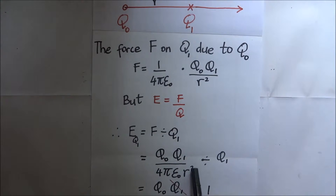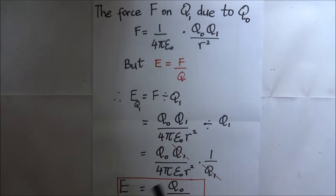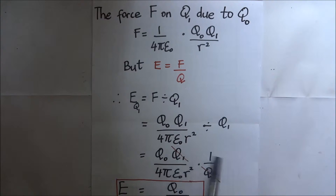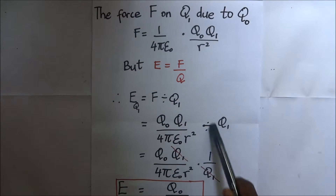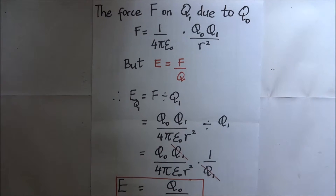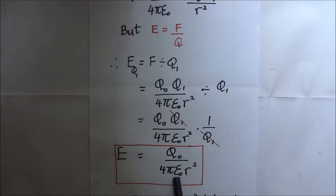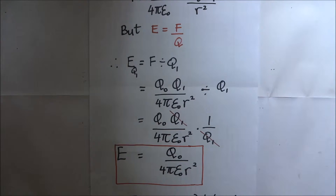Substituting, we get Q naught times Q1 over four pi epsilon naught times r squared, all divided by Q1. Continuing the arithmetic, Q1 cancels, and we remain with our formula for the intensity of a point charge: E equals Q naught divided by four pi epsilon naught times r squared.